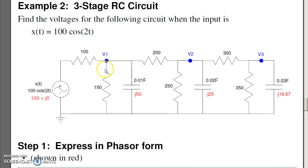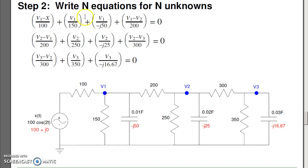Now write the voltage nodes. At node 1, current left, down, down, right equals 0. Node 2, current sum to 0. Node 3, current sum to 0. I want to write the node equations. For example, at node 1, I'll have v1 minus x over 100 plus v1 minus 0 over 150 plus v1 minus 0 over minus j50 plus v1 minus v2 over 200 equals 0. And get my three equations, three unknowns.